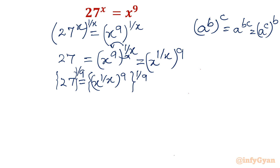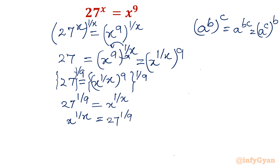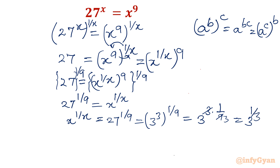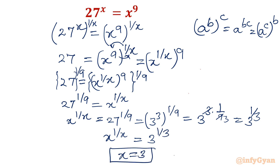Applying the same exponential property, the left hand side gives 27 power 1 over 9, and the right hand side gives x power 1 over x. So x power 1 over x equals 27 power 1 over 9. Writing 27 as 3 cube whole power 1 over 9, and taking the product of the powers, we get 3 power 1 over 3. Comparing both sides, x power 1 over x equals 3 power 1 over 3, so one solution is x equal to 3.